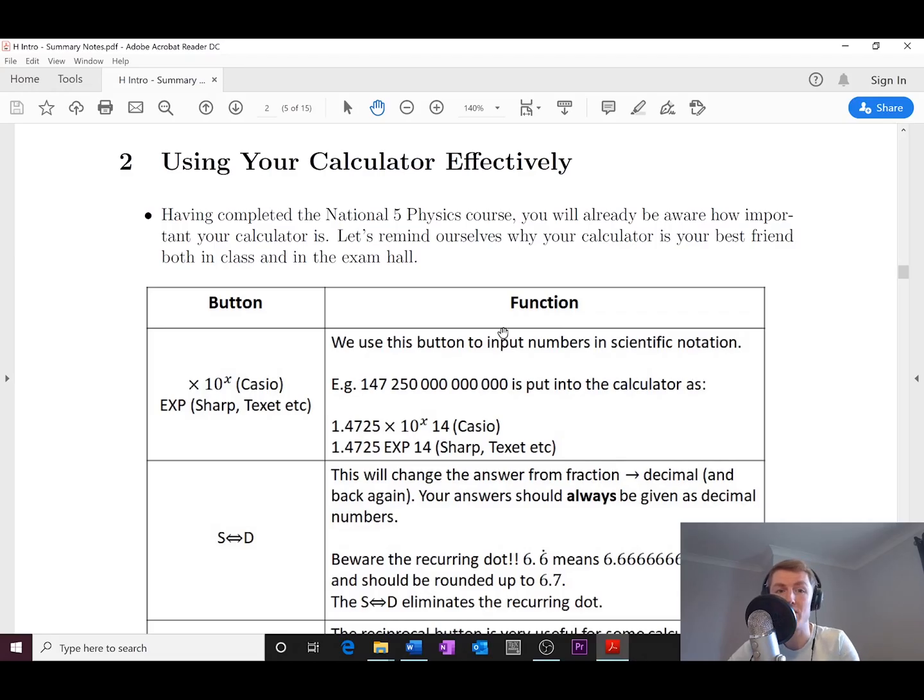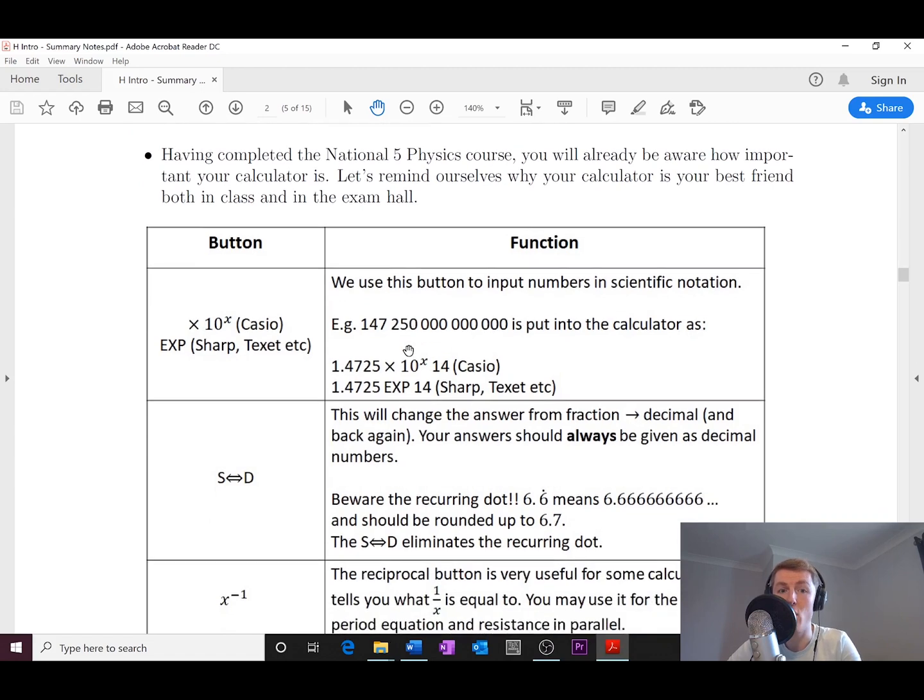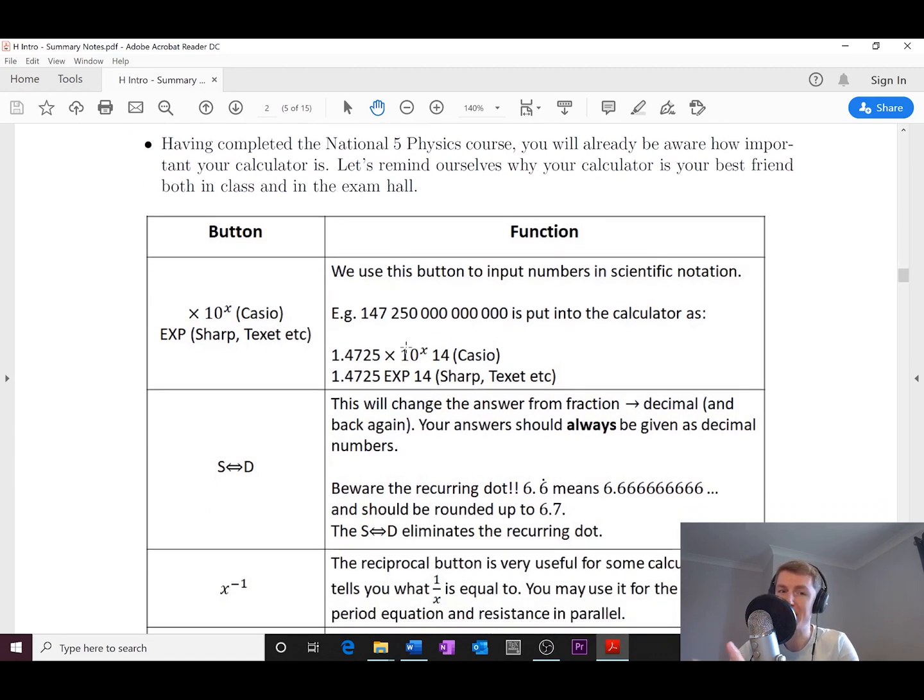Looking at the table, you'll see that we start off with the times 10 to the x button or the EXP button, depending on what type of calculator you have. So remember for a Casio, if you're trying to use scientific notation and type that in to your calculator, you would use the times 10 to the power of x button.